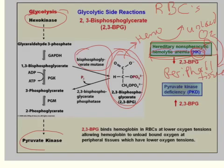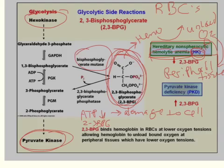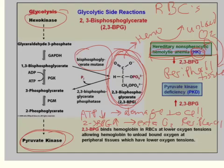Whenever you have a deficiency with pyruvate kinase, the first thing that happens is you have a lack of ATP, and so that causes damage to the cell. But you actually get a buildup of 2,3-bisphosphoglycerate, which increases and allows extra oxygen delivery to peripheral tissue. This is beneficial if you're running or working out, and it's also really good if you're pregnant, so you can get more oxygen to the fetus while it's growing.